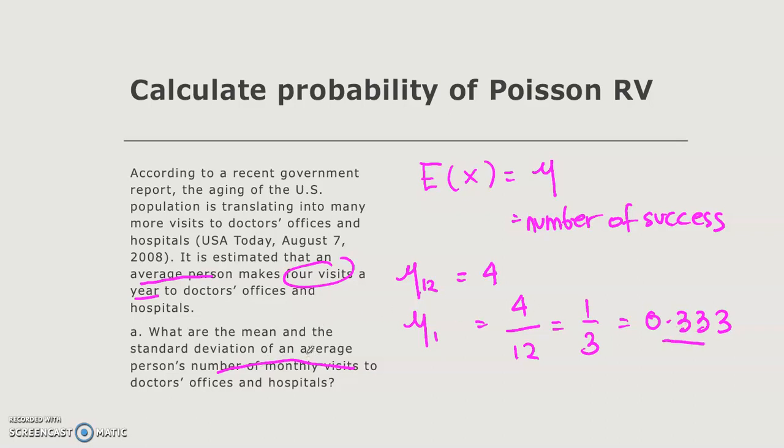And the standard deviation is equal to the mean also. So in Poisson probability distribution, the standard deviation is just equal to the mean, equal to 0.333. Oh, I'm sorry, it should be root of the mean or root of 0.333 because the variance of x is equal to the mean. So the standard deviation is just the root of the mean.